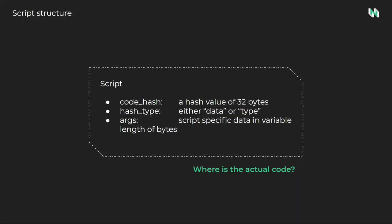Next, we'll look at the structure of a script. The data structure of a script contains three fields. The first is code hash — a 32-byte hash value that serves as a reference to the code that will execute. The second is hash type — a flag set to either data or type. The third is args, short for arguments — values passed to the script executable similar to passing arguments to a normal program. The structure and data in the args field is defined by the developer, so it may be implemented differently for each script.